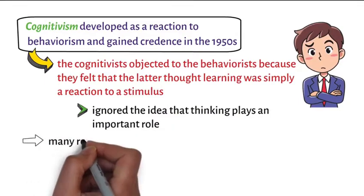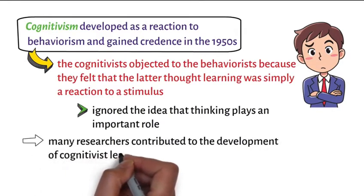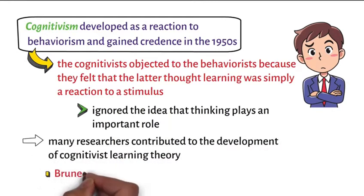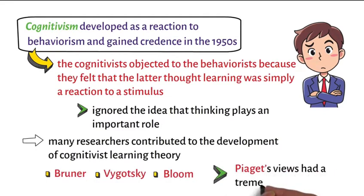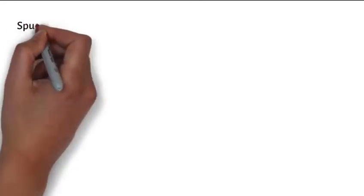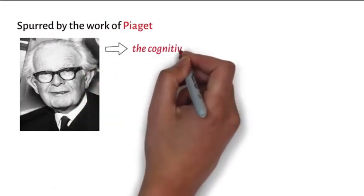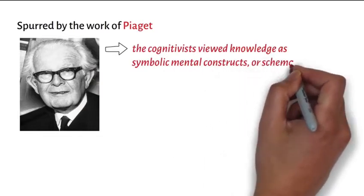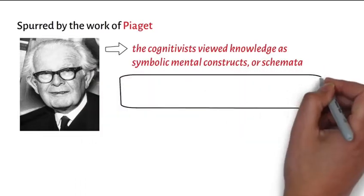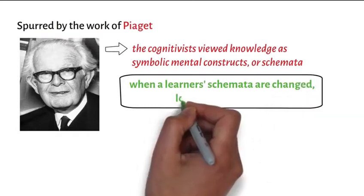Although many researchers contributed to the development of Cognitivist learning theory, such as Bruner, Vygotsky, and Bloom, Piaget's views had a tremendous impact. Spurred by the work of Piaget, the Cognitivists viewed knowledge as symbolic mental constructs, or schemata. For the Cognitivists, when a learner's schemata are changed, learning takes place.